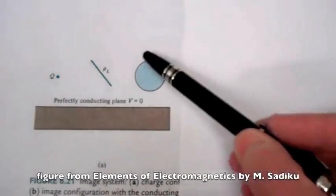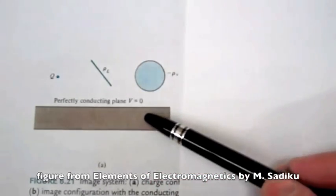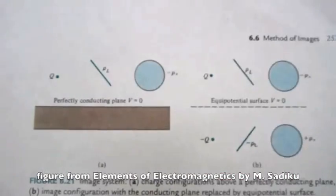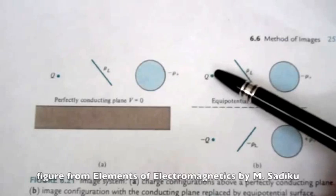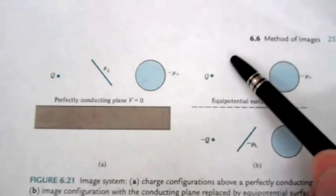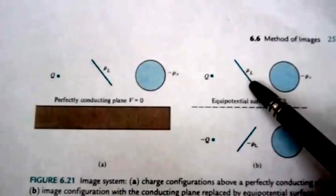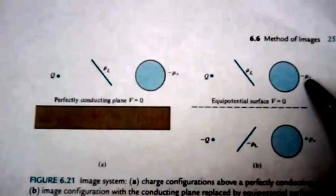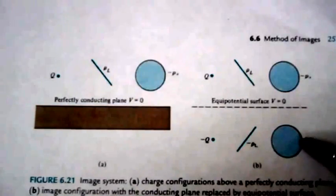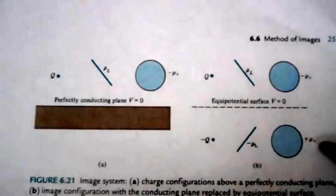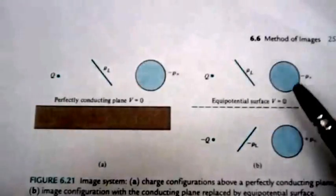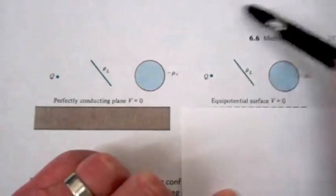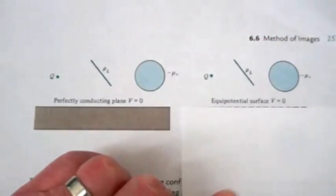Because superposition holds, if you have a more complicated arrangement of charges above a grounded conducting plane, you can remove the conducting plane and put mirror images of all those charge patterns. For a positive point charge Q, you put a mirror image charge of opposite polarity. For a line charge of line charge density ρ_l, you put a mirror image of opposite polarity minus ρ_l. For a volume charge distribution of minus ρ_v, you put a mirror image of opposite polarity plus ρ_v. Solving this system gives the exact same electric field and potential pattern above the plane as the original charges above the conductor.